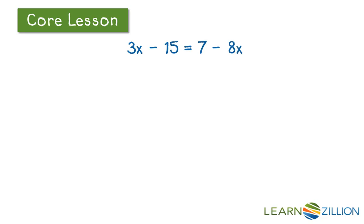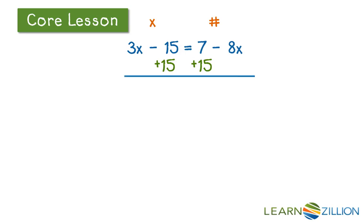Now let's say we have this equation: 3x minus 15 is equal to 7 minus 8x. We are going to use a similar method here. The first thing we need to do is make sure one side is dedicated to our variables and the other side to our numbers. I'm going to make the left side for x terms and the right side for numbers. So we need to get rid of that minus 15 from the left side by adding 15 to both sides. When we add 15 to the left side, we are left with 3x. On the right side, 15 plus 7 gives us 22, leaving us with 22 minus 8x.